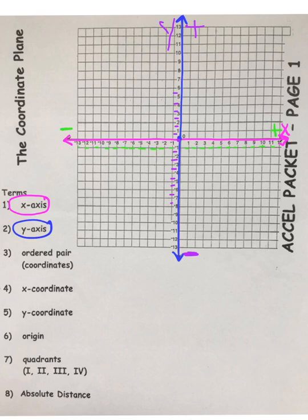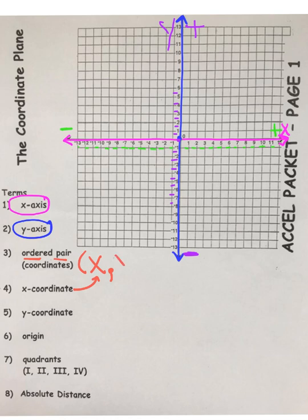Now let's put the two together in what is called an ordered pair. An ordered pair is made up of two parts: an x-coordinate, that's your first value, and x is always given first. That's your x-coordinate, and then given second is your y-coordinate. When you put these two values together, you can plot a point on the coordinate plane.